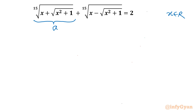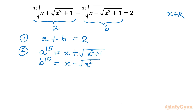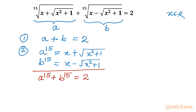I will consider the first 15th root as 'a' and the second as 'b', and frame a set of equations. Equation 1: a + b = 2. Equation 2: a^15 = x + √(x²+1), and b^15 = x - √(x²+1). Adding these gives a^15 + b^15 = 2x, which is equation 3.